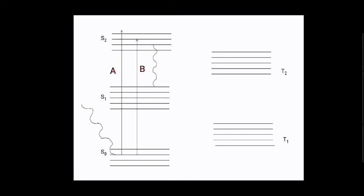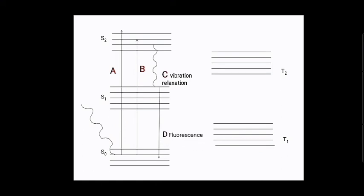The raised electron then rapidly drops to the lowermost vibrational level of S1 by losing excess vibrational energy — this is path C, known as vibrational relaxation. From the lowermost vibrational level of S1, the electron may come back to the ground state S0 either by giving out light energy, which we call fluorescence, or by giving out heat energy, which is a type of internal conversion.